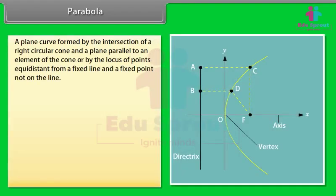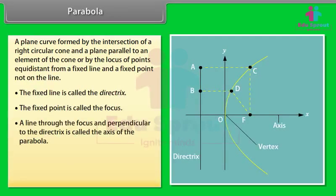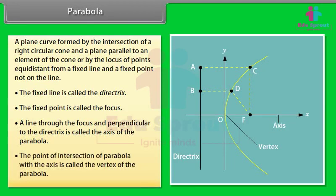A parabola is a plane curve formed by the intersection of a right circular cone and a plane parallel to an element of the cone, or by the locus of points equidistant from a fixed line and a fixed point not on the line. The fixed line is called the directrix and the fixed point is called the focus. A line through the focus and perpendicular to the directrix is called the axis of the parabola. The point of intersection of the parabola with the axis is called the vertex.